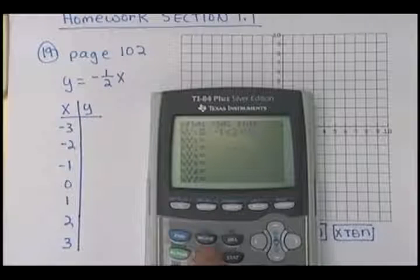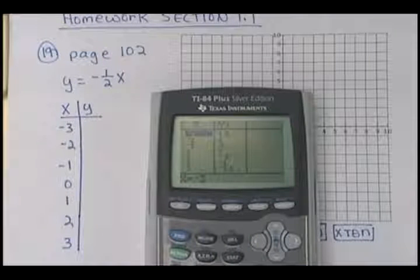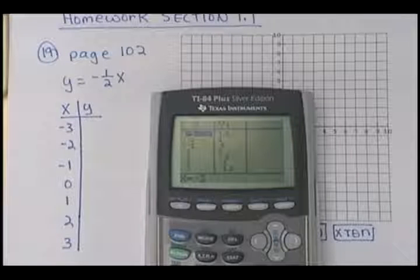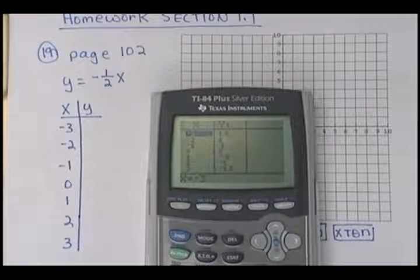Now, what I'm going to do is get my table, second table, and I want for the negative 3, negative 2, negative 1, 0, 1, 2, and 3. And you notice that it gives it to you here, right?